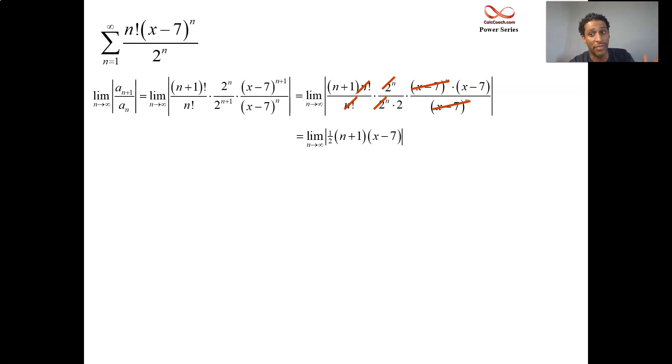And we're left with the product of n plus 1 and x minus 7 all divided by 2. But n's going to infinity. And x is a constant no matter what that part is. It's not going to stop us from going off to infinity. This limit is infinite. It'll never converge. If infinity is always greater than 1, no value of x will make this limit be less than 1. That will all of a sudden give us convergence.